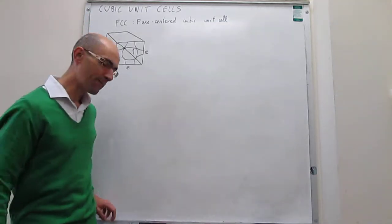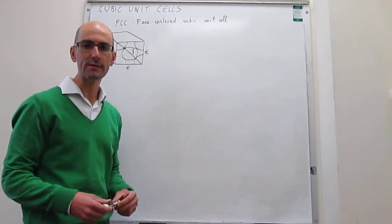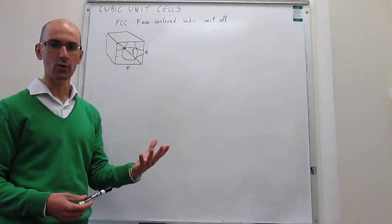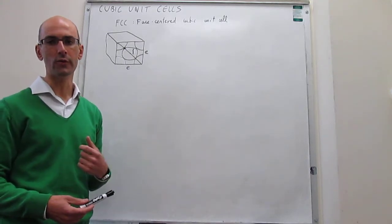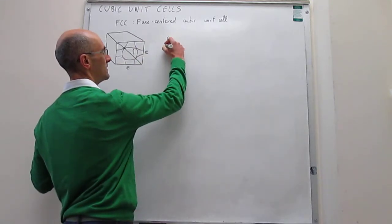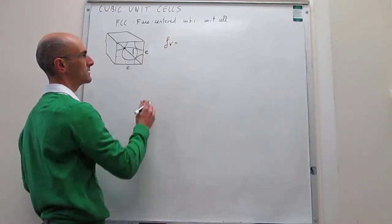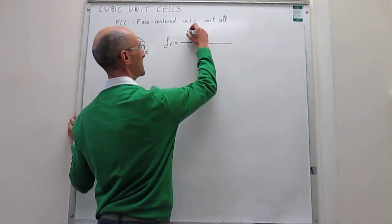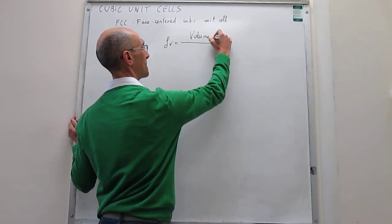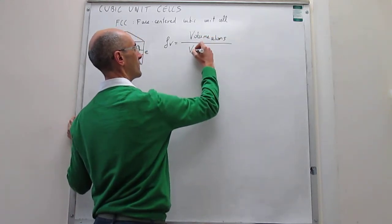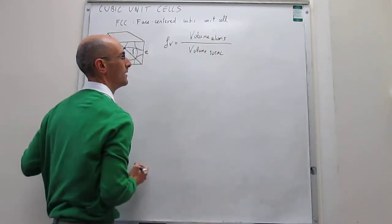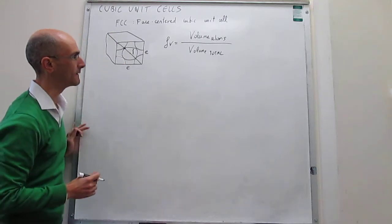First we're going to define what that packing efficiency is, which is simply the number or the ratio of the volume occupied by atoms over the total volume in the unit cell. So that is going to be our operating definition. This packing efficiency, or fraction of volume occupied, is simply equal to the volume of the atoms divided over the total volume.